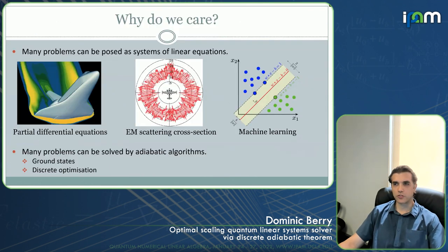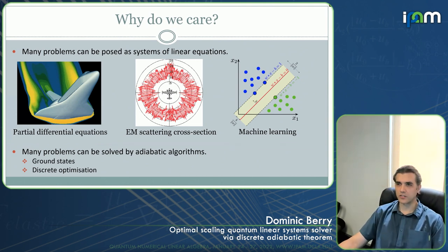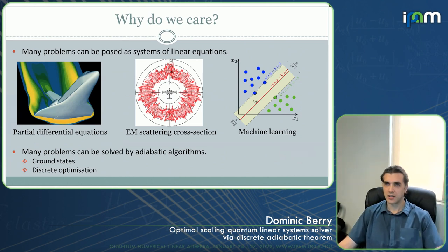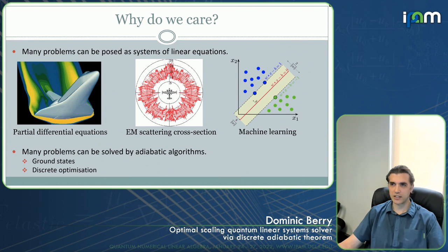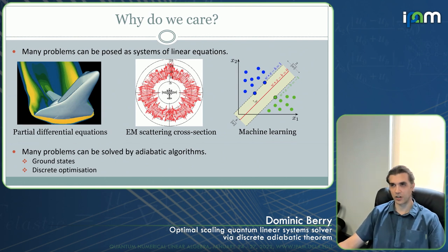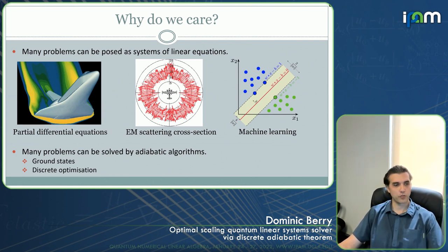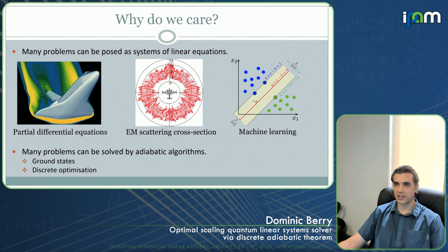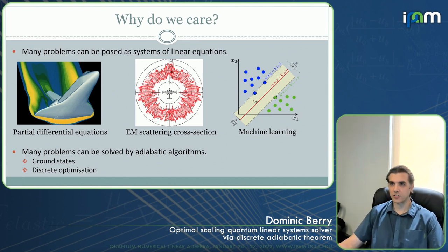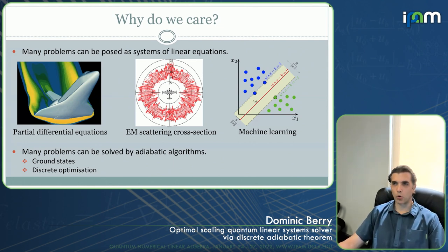In terms of motivation for why we care about solving linear systems: on a quantum computer you can get exponential speed-ups for large systems of linear equations, which can be obtained in particular from discretizing partial differential equations. You might use this, for example, for solving flow problems or for solving electromagnetic scattering cross-sections, such as the radar signature of a plane. There are also applications in machine learning. More generally, if you're looking at adiabatic algorithms, these are used for solving for ground states, which can encode solutions to other problems.